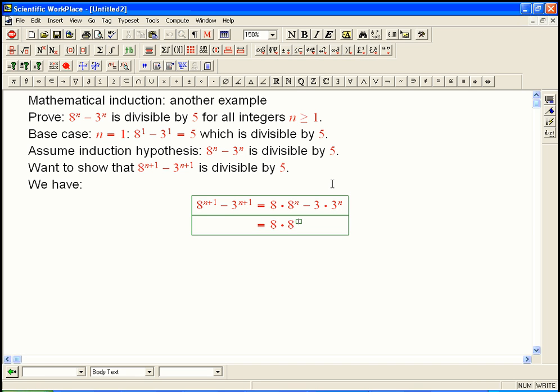That's 8 × 8^n minus, let's see, how do I want to do it? Minus 8 × 3^n, there we go, plus 8 × 3^n minus 3 × 3^n.